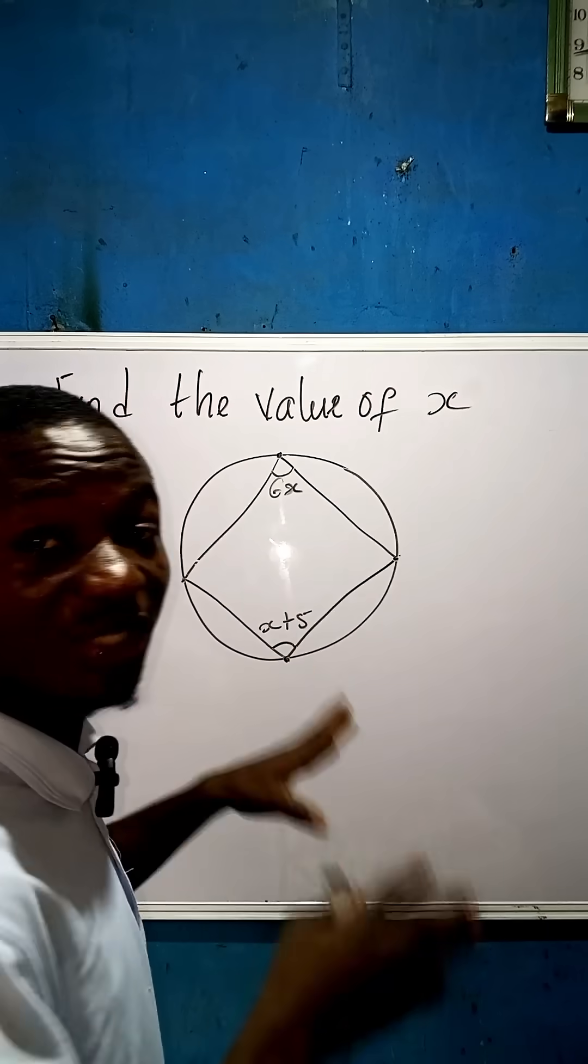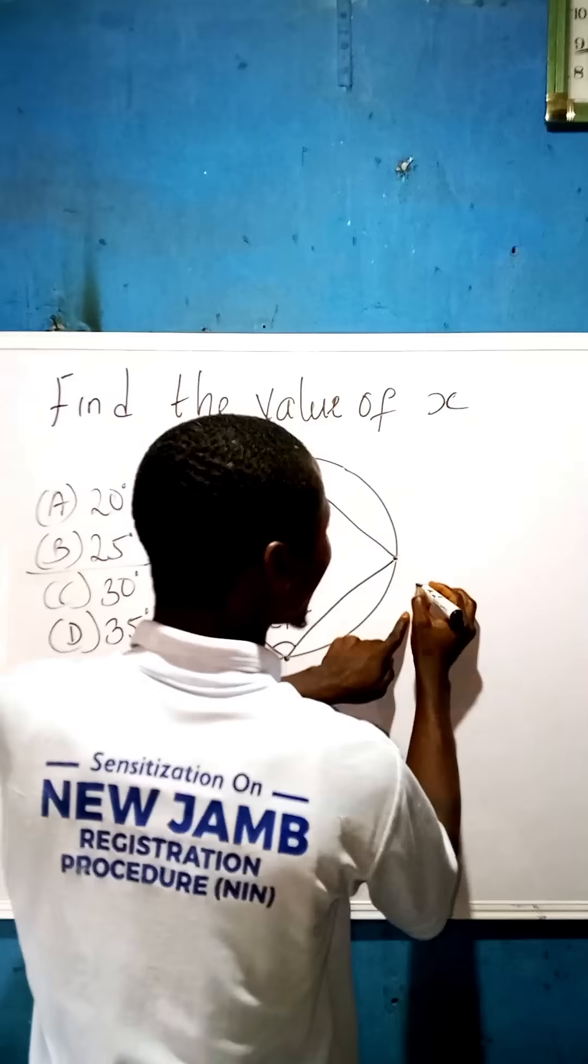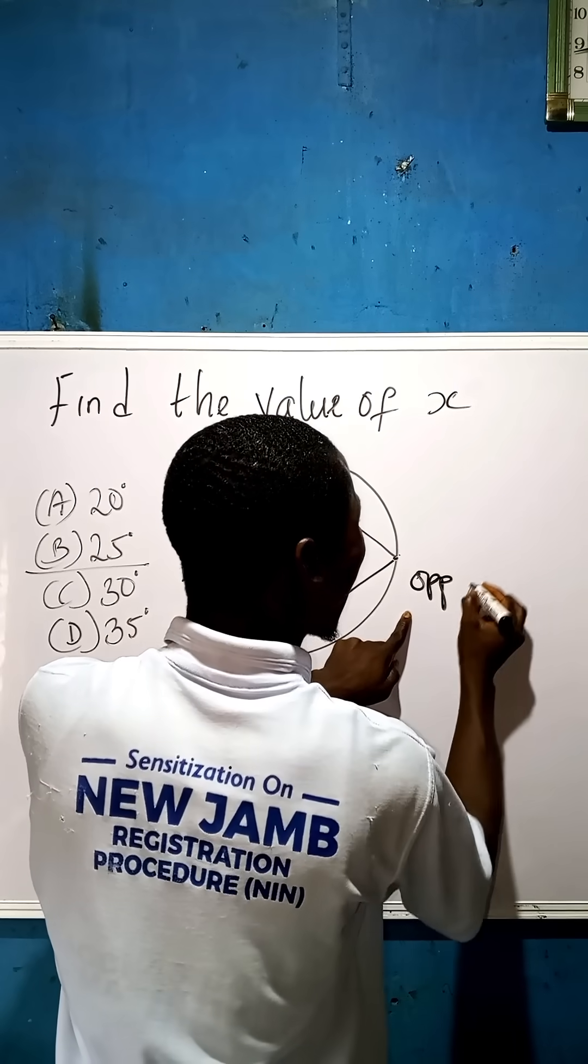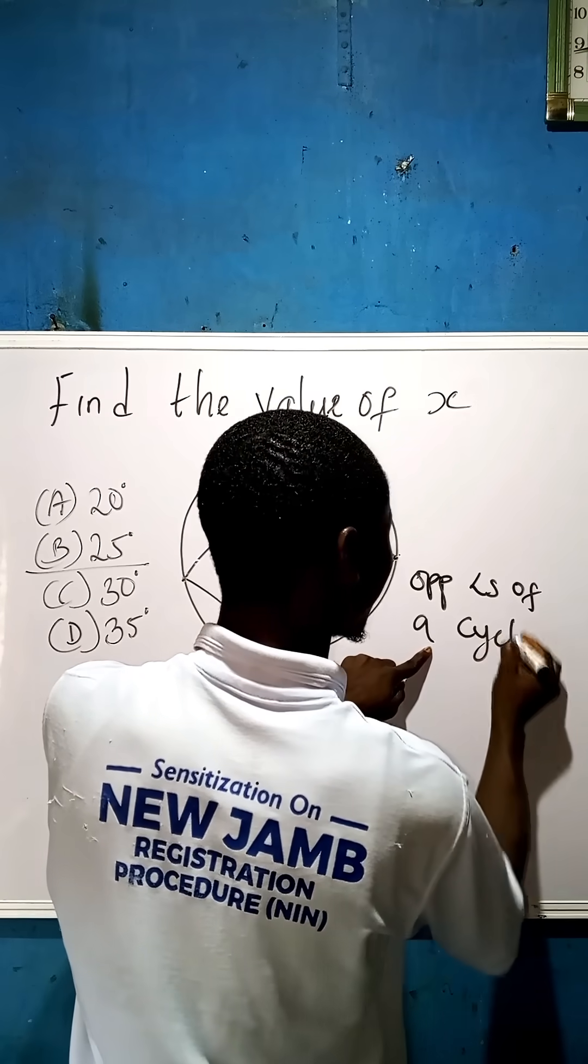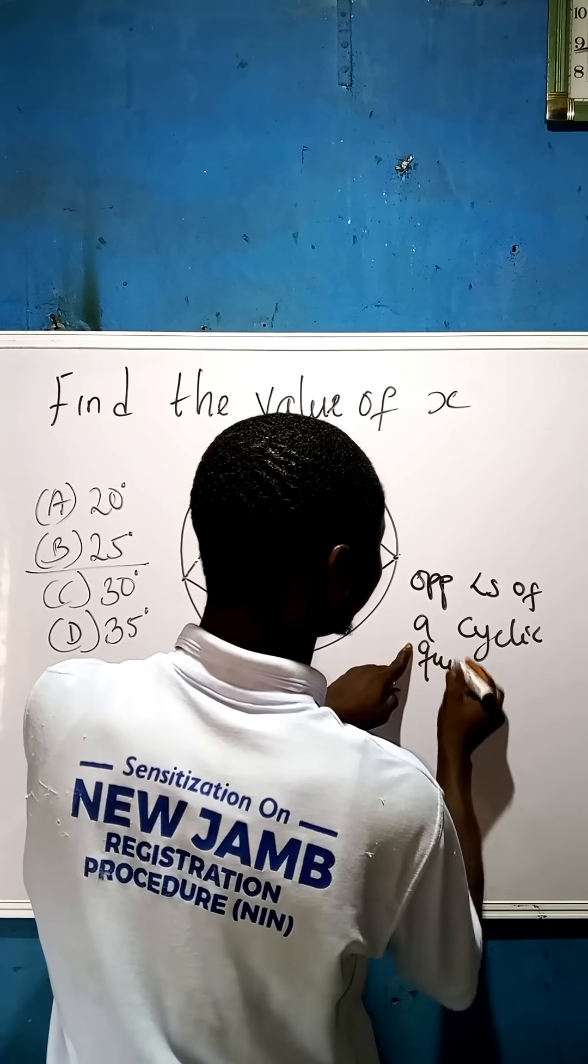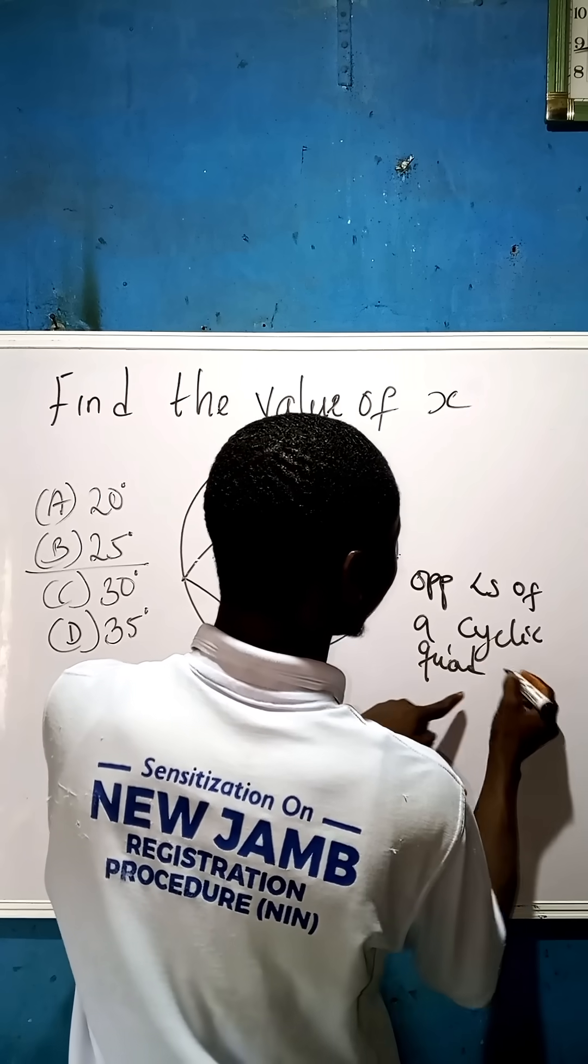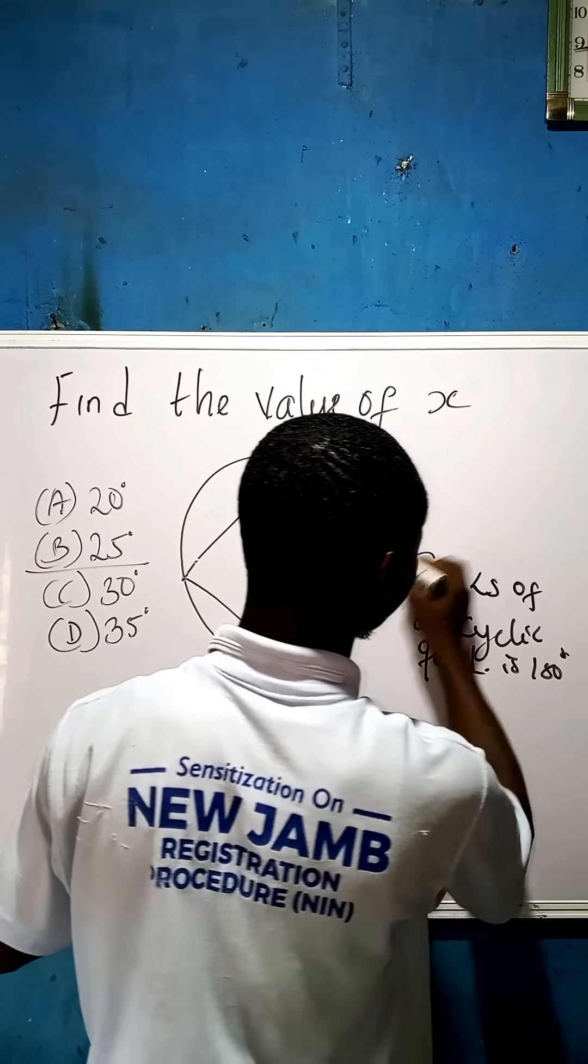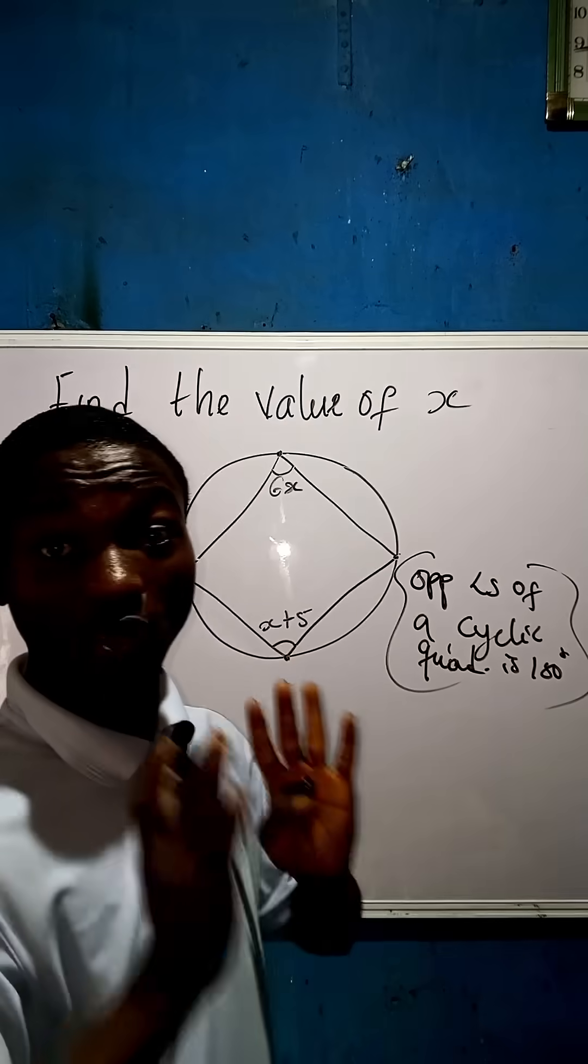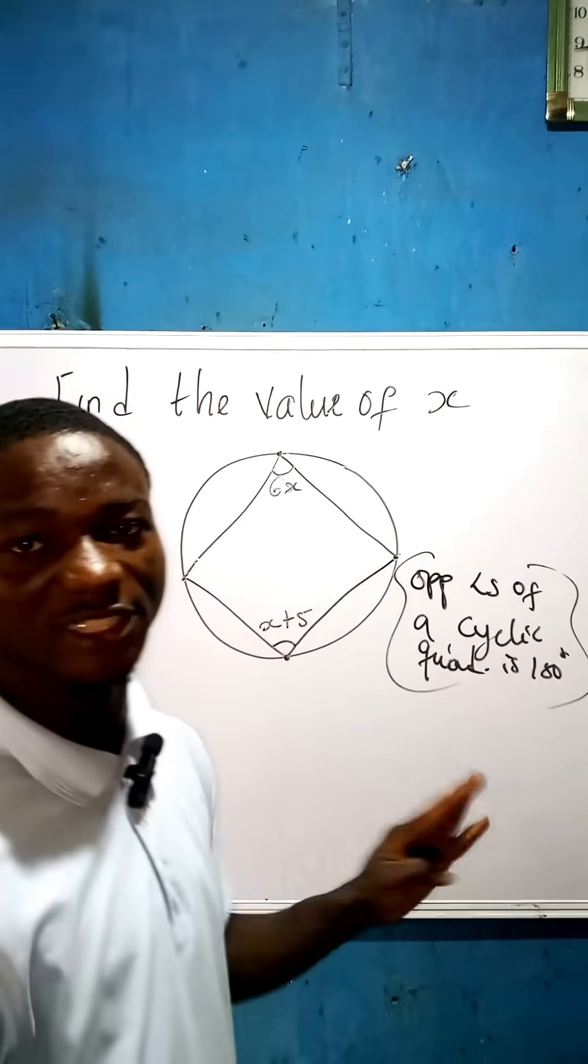So the theorem, go back to the theorem, we say that opposite angles of a cyclic quadrilateral is 180 degrees. Bam. As long as you can use this theorem, it's finished.